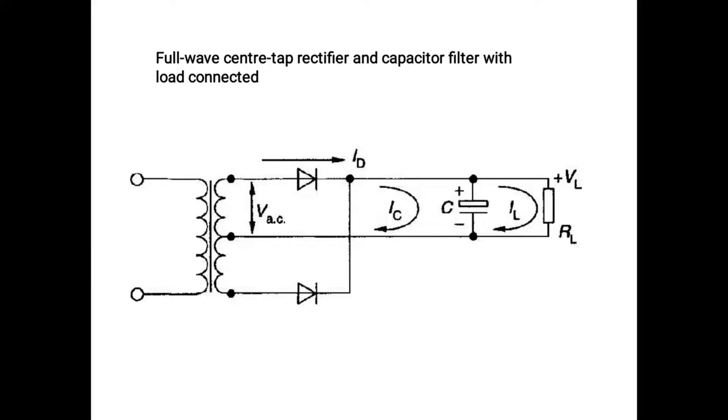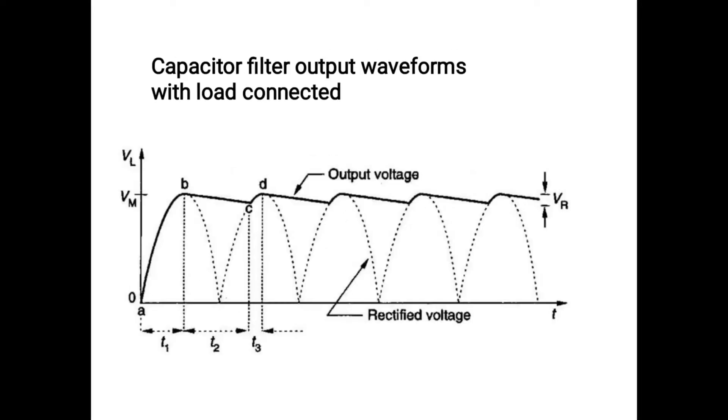With the full wave rectifier, a capacitor filter is used and connected for the load. This filters the output of the load connecting rectifier voltage.